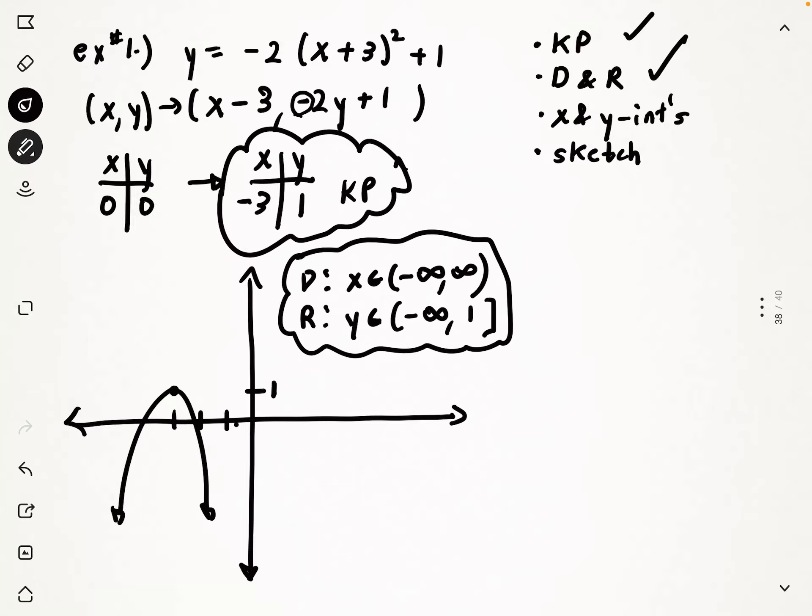You're only asked to get intercepts in some of the questions, so if you're not asked, you don't need to do that. But in this case, we are asked. So let's get the y-intercept first. And of course, y-intercept is plug in zero for x, and you do that into the equation. Of course, so if I plug in zero for x here, I'm going to get something like this.